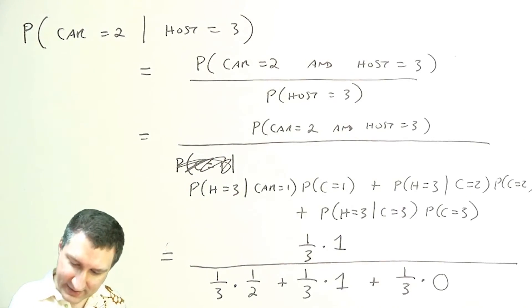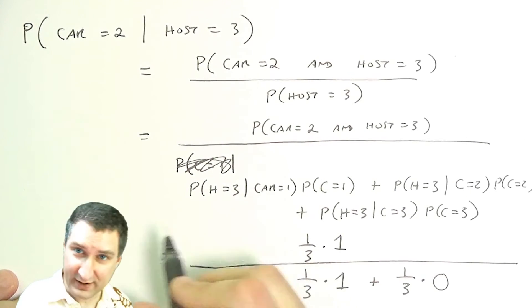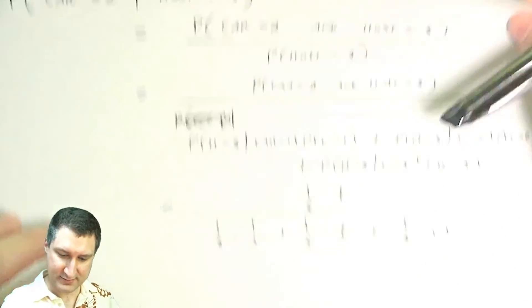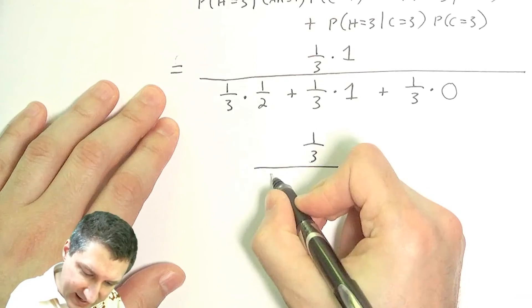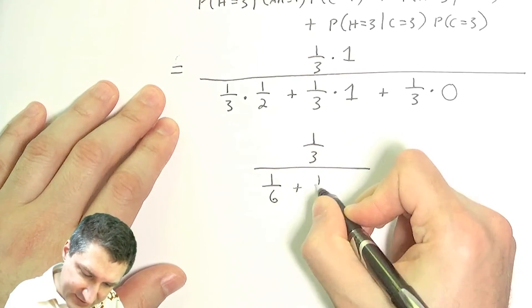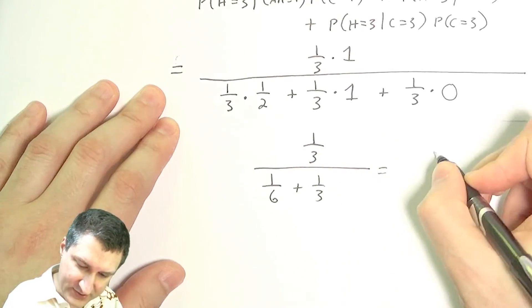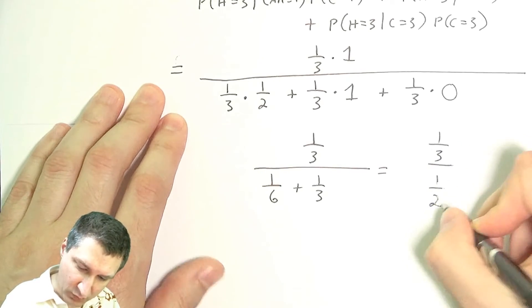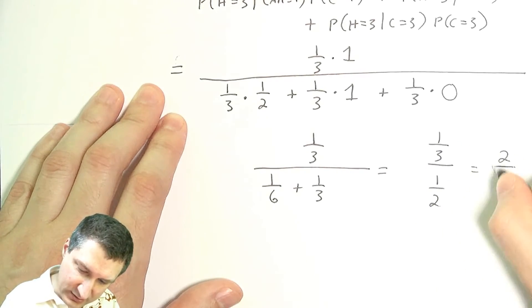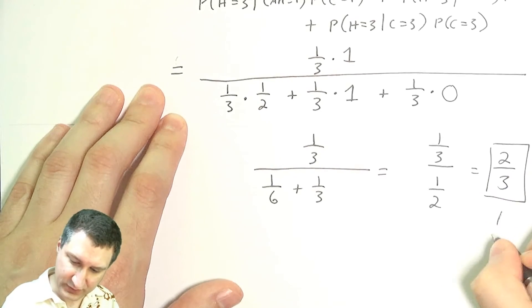And this number in the numerator is exactly the same as this piece here. So now I can compute that. On the top I have a third. On the bottom I have a sixth plus a third plus zero. So I have one third over one half, which is two thirds.